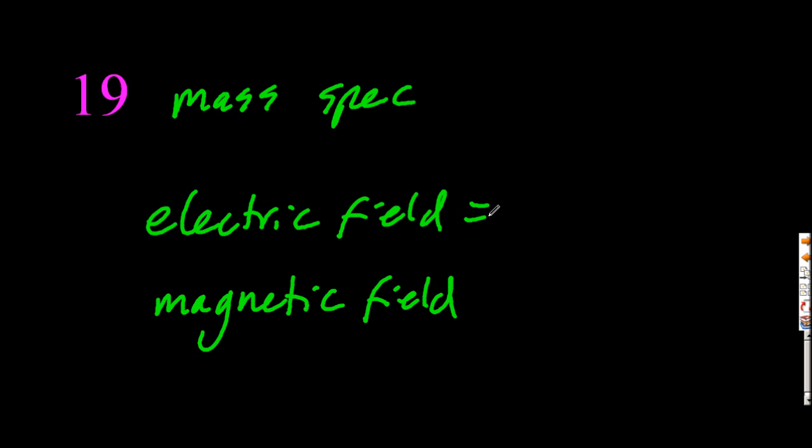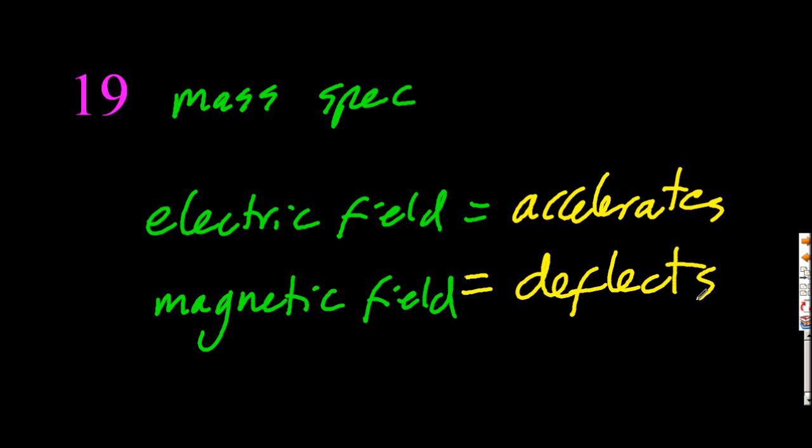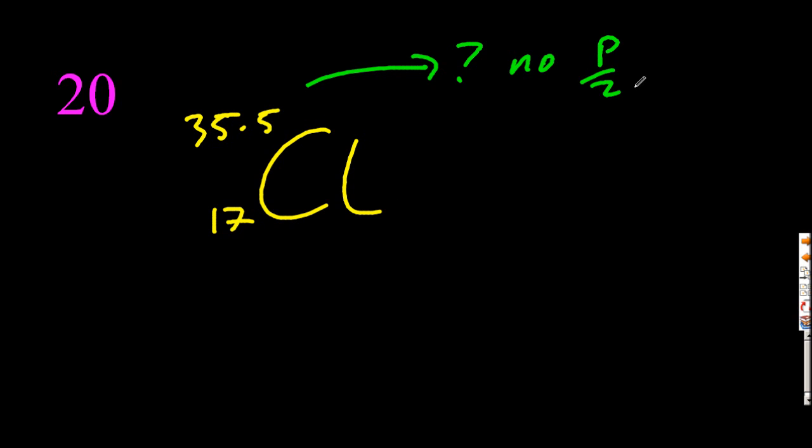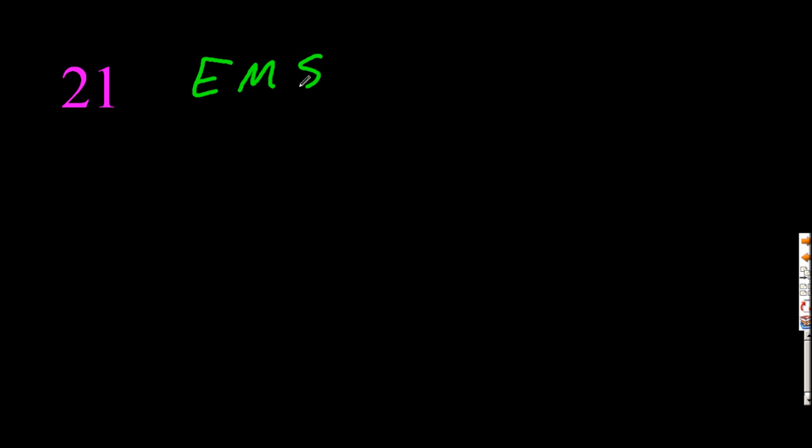For the mass spectrometer, they're going to try and confuse you between electric and magnetic fields. The electric field accelerates the ions. The magnetic field deflects the ions. There is no such atom with a 35.5 mass, but that's a weighted average, a product of the mathematics.